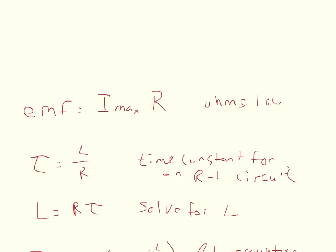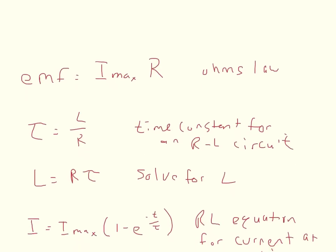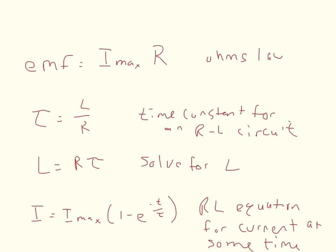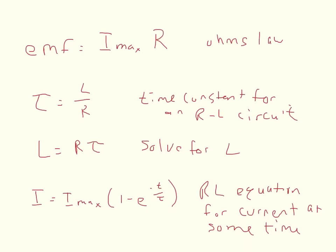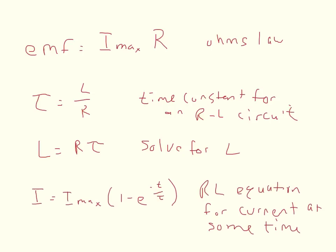In the next part, it wants to know what the current would be after one time constant. So we set up the equation for the current at some time. And that's the current at some time is going to be equal to the maximum current times one minus E to the negative T over tau power. But it says after one time constant. So after one time constant, the time would equal the time constant.